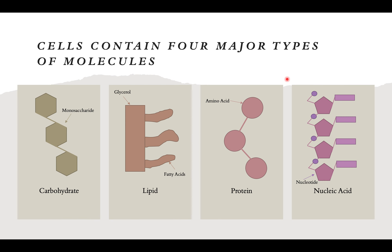Cells contain four major types of molecules: carbohydrates, lipids, proteins, and nucleic acids. Carbohydrates, nucleic acids, and proteins all contain multiple different types of what we call monomers, which are individual parts making up the larger structure. We're going to talk more about monomers in the next few slides.